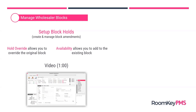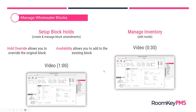Throughout the contract length, there may be occasions where the wholesaler negotiates an increase or decrease in room inventory for a future date. Instead of managing the entire block itself, if you just wanted to change the inventory for one or two days, there is a very quick way to do that using edit mode. I have a video showing this quick process — it takes about 30 seconds to edit one or two days of inventory for a wholesaler block.